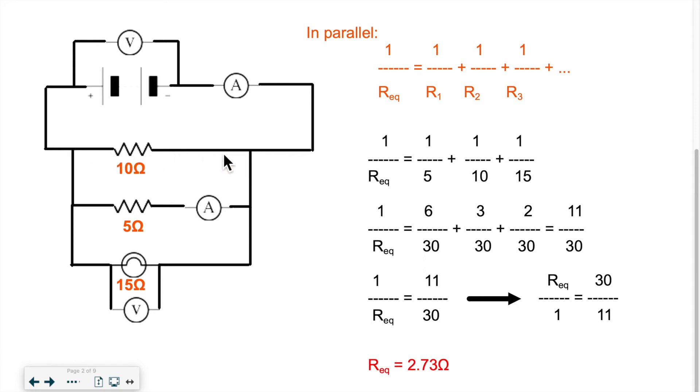The current can either go here, or it can choose to go through the second branch, or it can choose to go through the third branch. So we have nodes every time the current splits, and we have nodes every time the various currents merge.